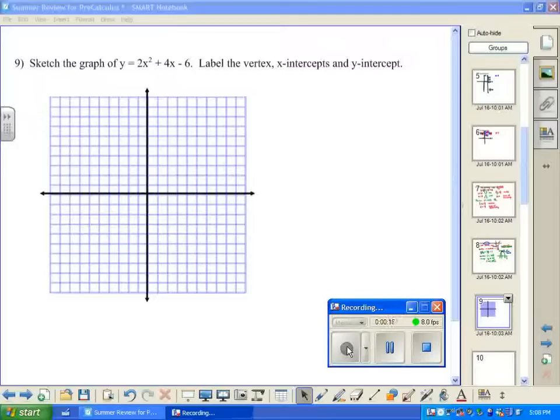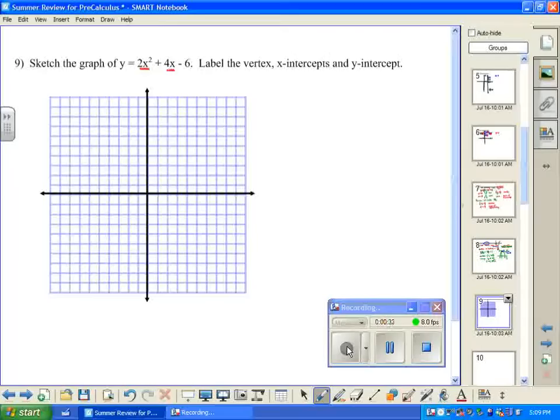The easiest value to identify from the equation is the y-intercept. The y-intercept will be the value of the equation when x equals 0. If I substitute in a 0 for x here and here, I have negative 6. So our y-intercept is negative 6, and I'll start by plotting that at (0, -6).